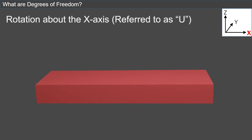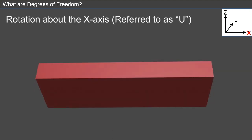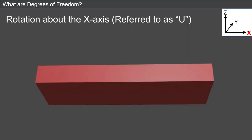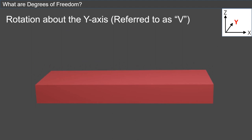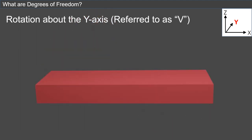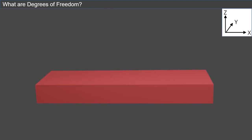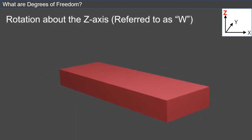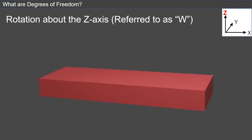Rotation about the X-axis is the ability of an object to rotate about the X-axis, referred to as U. Rotation about the Y-axis is the ability of an object to rotate about the Y-axis, referred to as V. Rotation about the Z-axis is the ability of an object to rotate about the Z-axis, referred to as W.